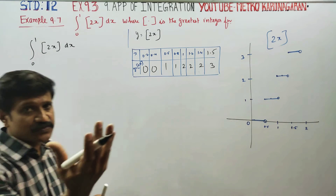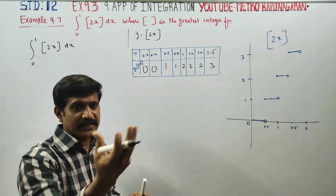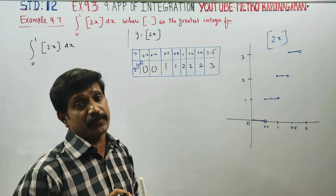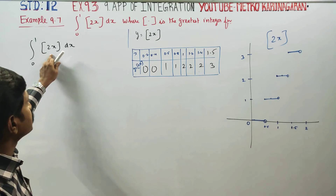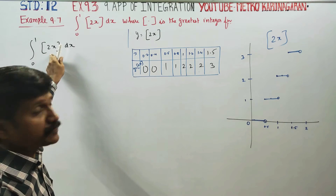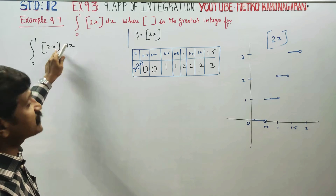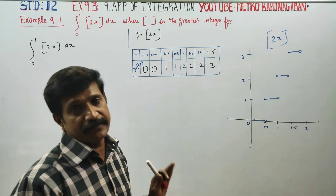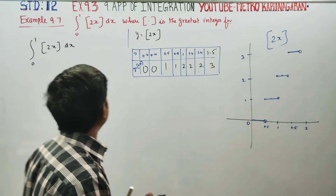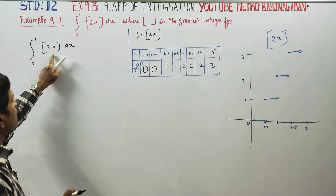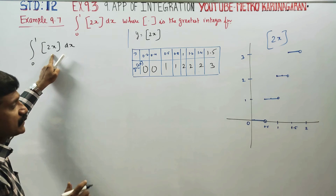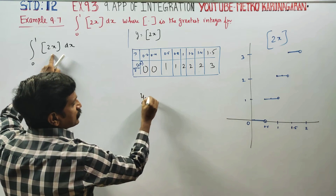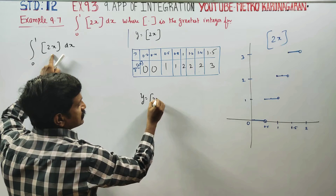The greatest integer function gives only constant values on intervals — it gives answers directly. That's why you cannot do direct ordinary integration treating it as an x variable. How do we integrate it then? We look at y = GIF(2x).